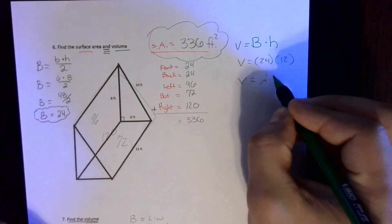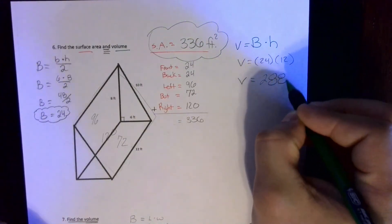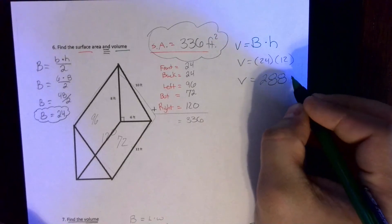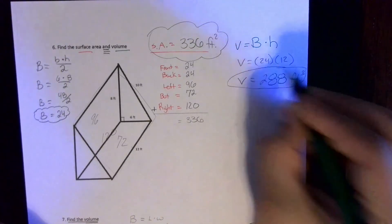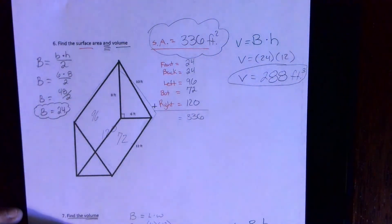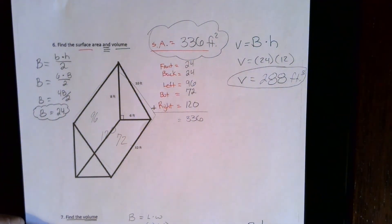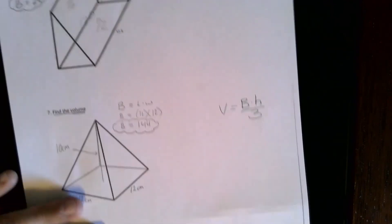For the volume, when I multiply this one out, I believe you get 288 cubic feet, that's 24 times 12. So there's your surface area and your volume for that triangular prism. Moving on to the last problem, number seven.